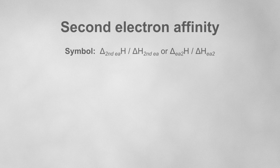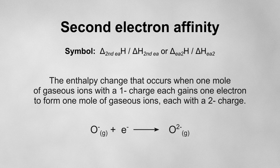The second electron affinity is the enthalpy change that occurs when one mole of gaseous ions with a 1− charge each gains an electron to form one mole of gaseous ions, each with a 2− charge.